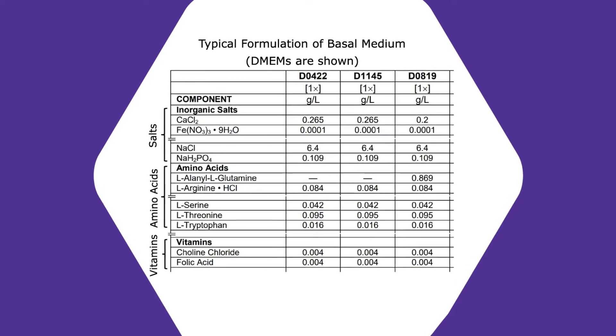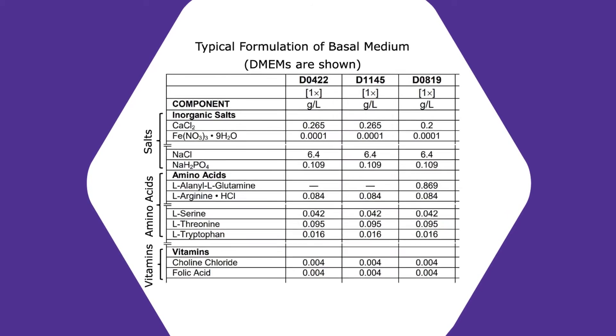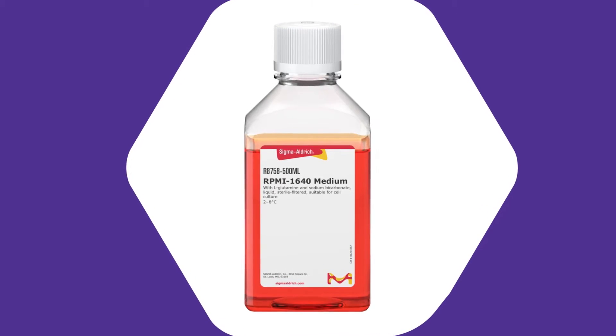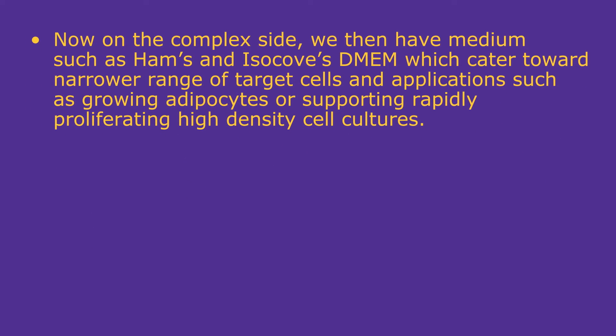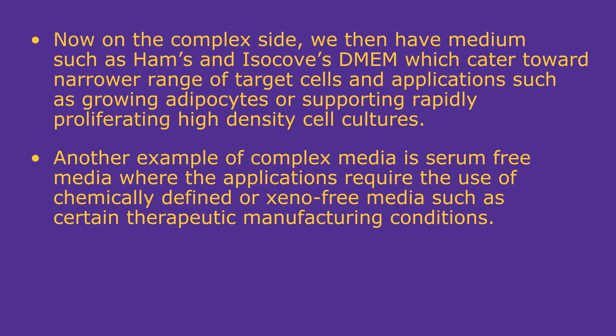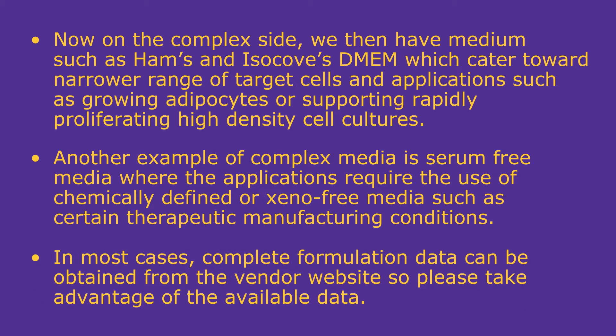When supplemented with serum, these basal media are considered complete media and can be used for culturing a wide range of cells. We also have media such as RPMI, which can still be considered a basic media, but gears towards hematopoietic cells with its pH 8 formulation. Now on the complex side, we then have media such as Ham's or Iscove's DMEM, which cater towards a narrower range of target cells and applications such as growing adipocytes or supporting rapidly proliferating high-density cell cultures. Another example of complex media is serum-free media, where applications require the use of chemically defined or xeno-free media, such as in certain therapeutic manufacturing conditions. In most cases, complete formulation data can be obtained from the vendor website, so please take advantage of the available data.